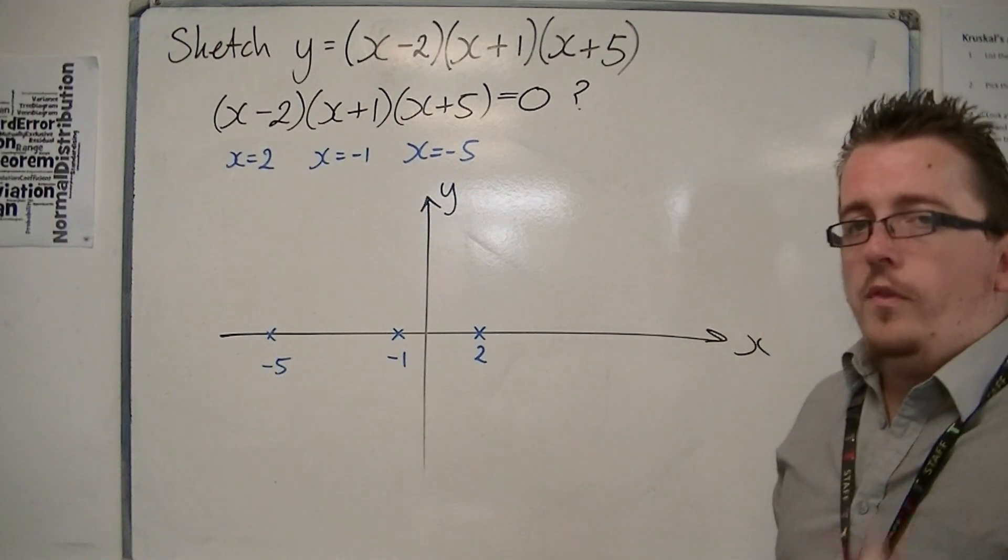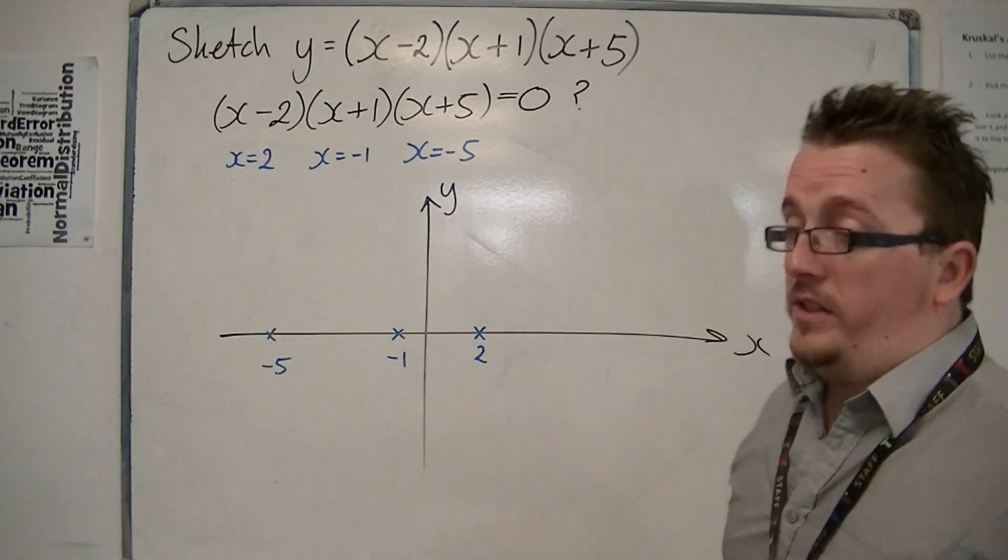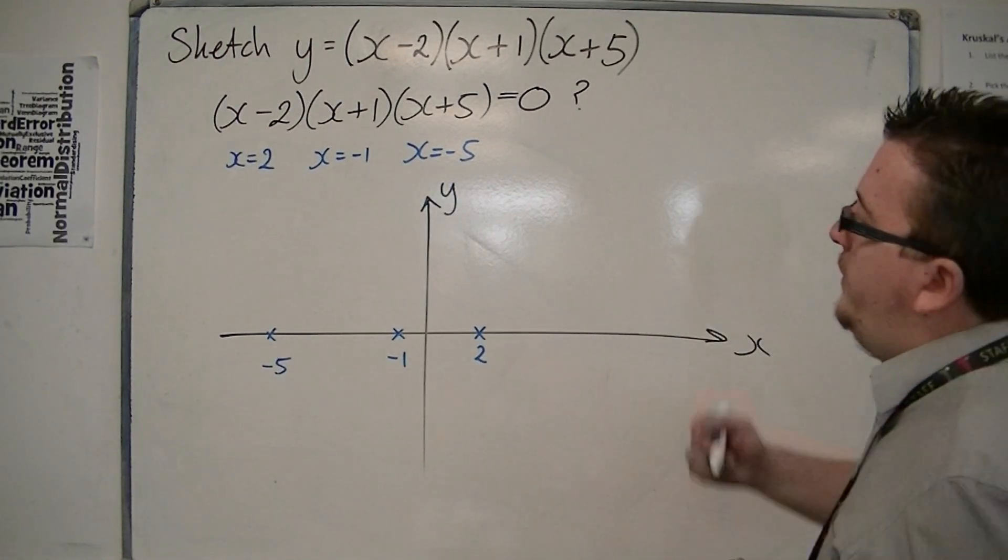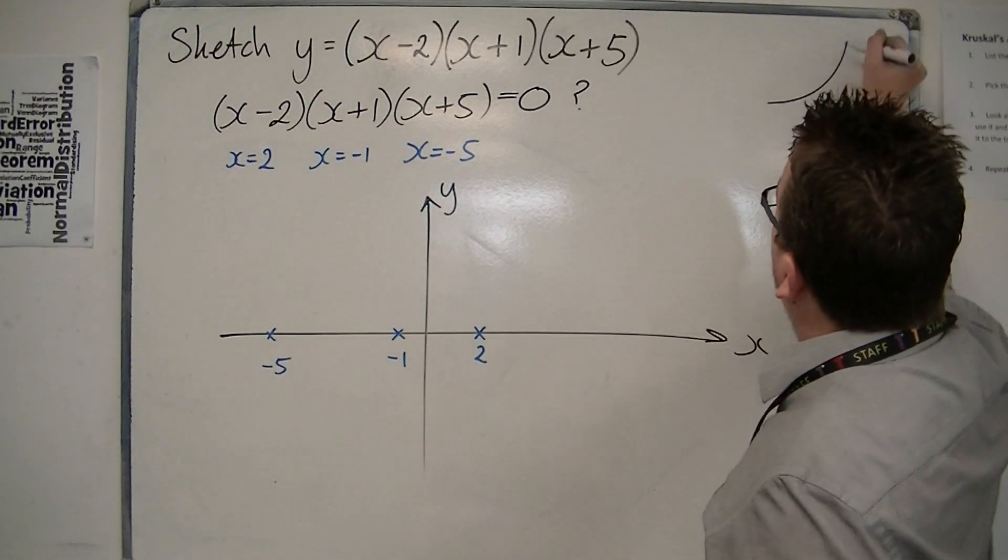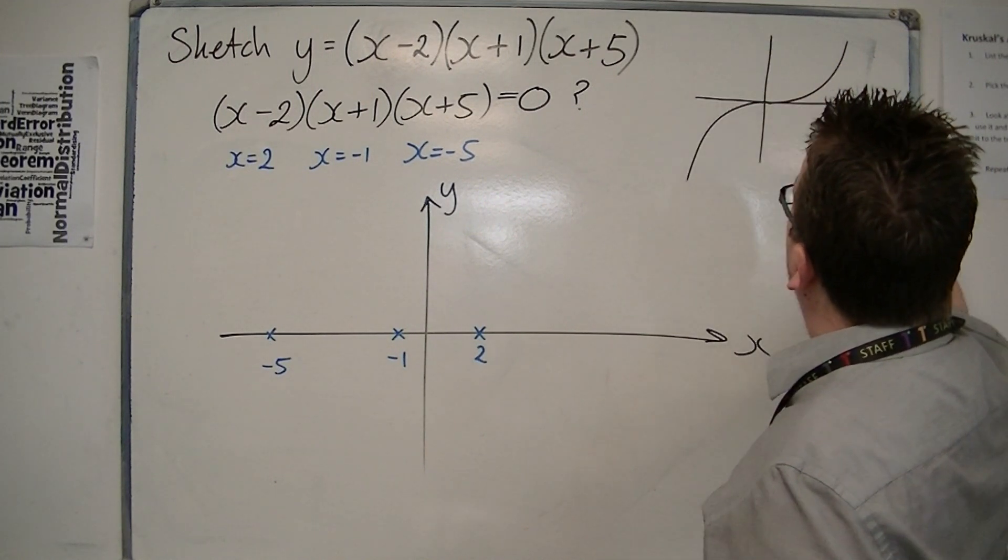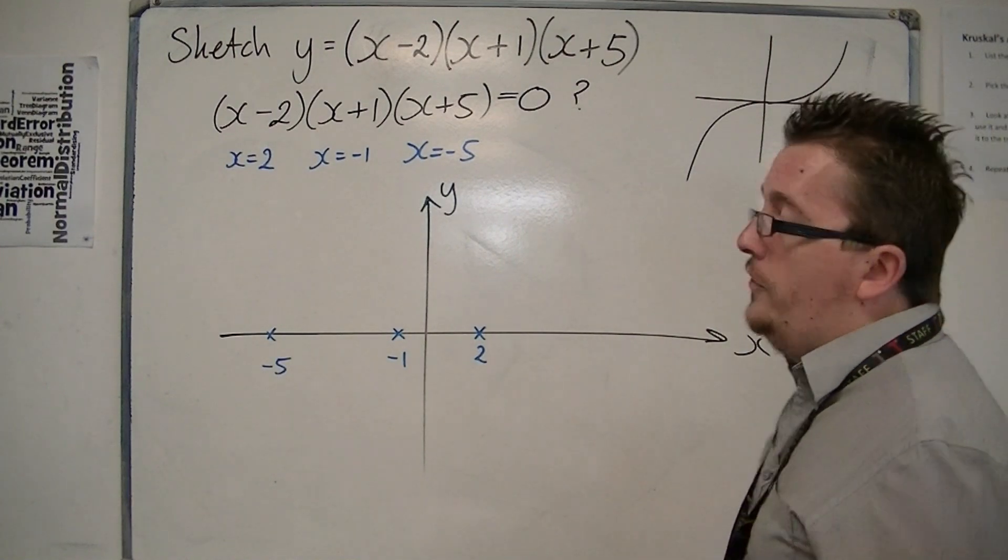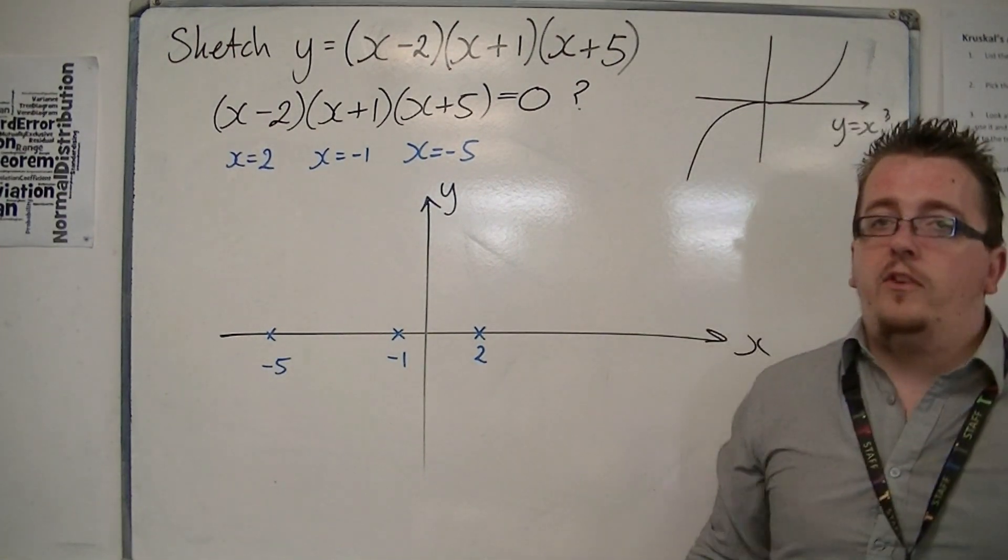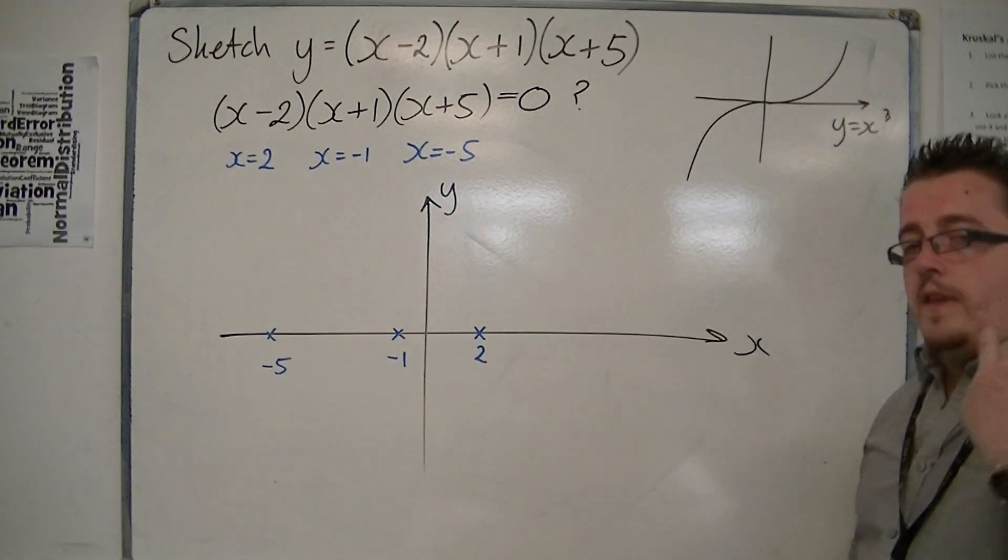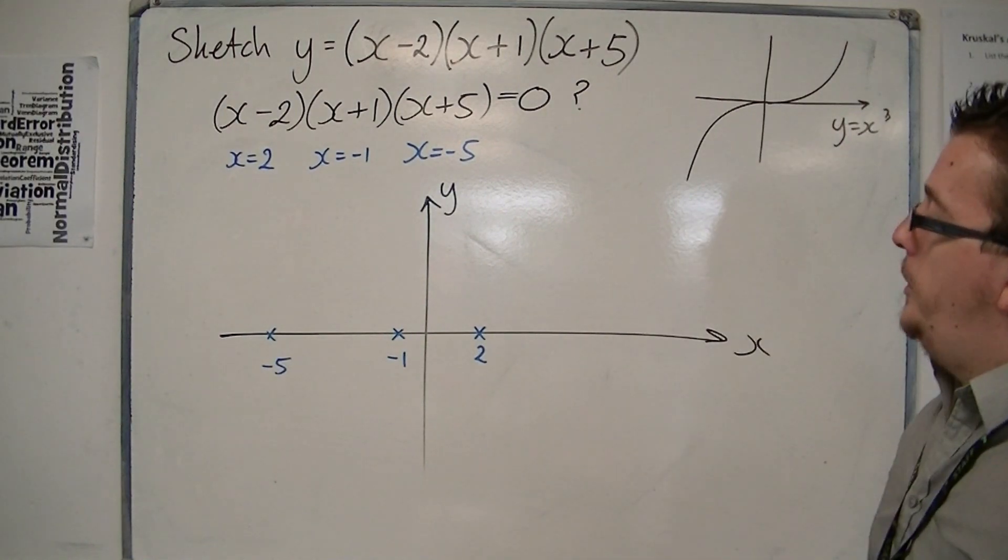So we know that the curve must cross these three points. So it's different to when we were looking at y equals x cubed, because y equals x cubed looked like that. Now, that's not crossing the x-axis at three points. It's only crossing it at one.